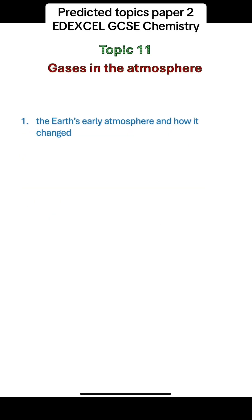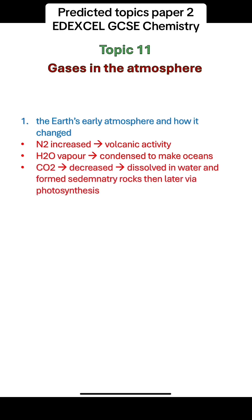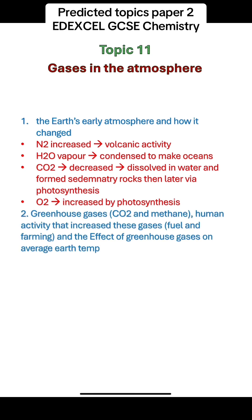Gases in the atmosphere: the Earth's early atmosphere and how it changed. Remember that nitrogen increased due to volcanic activity, water vapour condensed to make oceans, carbon dioxide decreased first because it dissolved in water and then formed sedimentary rocks and later via photosynthesis, and oxygen increased due to photosynthesis. Remember the greenhouse gases — carbon dioxide and methane — and the human activities that increased these gases, such as the use of fuels and farming, and also the effect of greenhouse gases on the average Earth temperature.